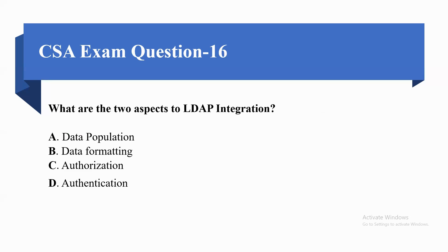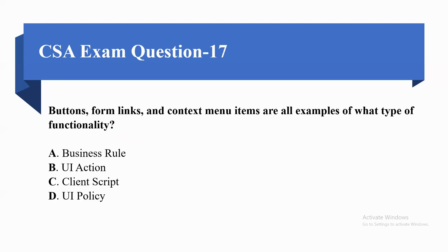Next question: what are the two aspects of LDAP integration? Options are: option A data population, option B data formatting, option C authorization, and option D authentication. The correct options are option A data population and option D authentication.